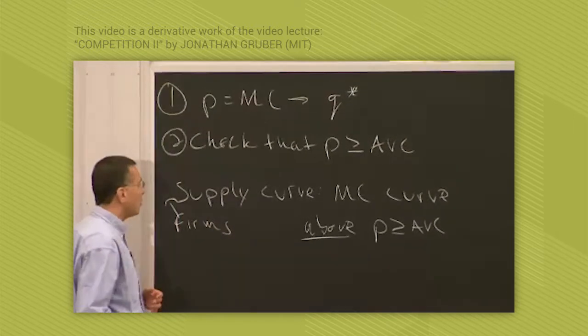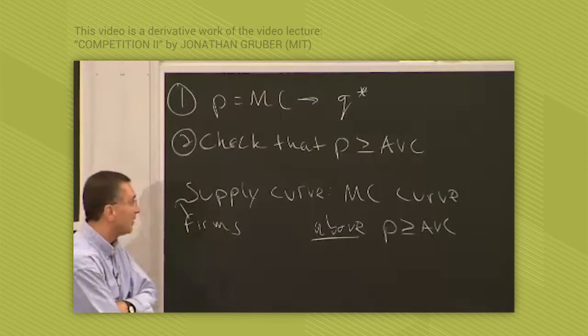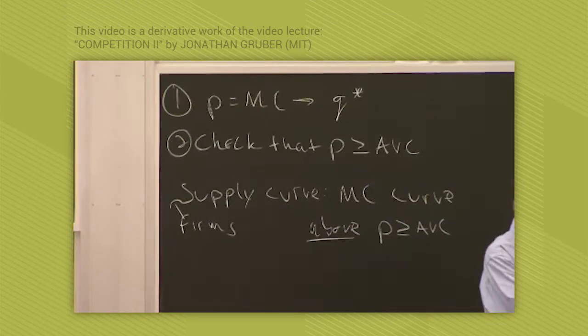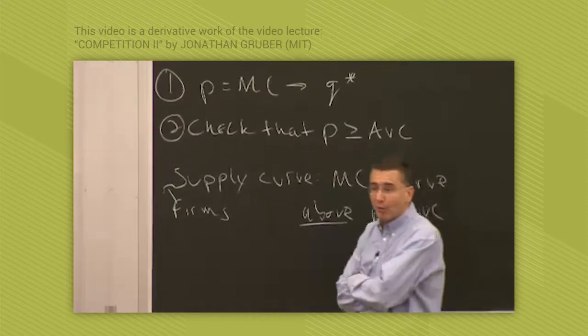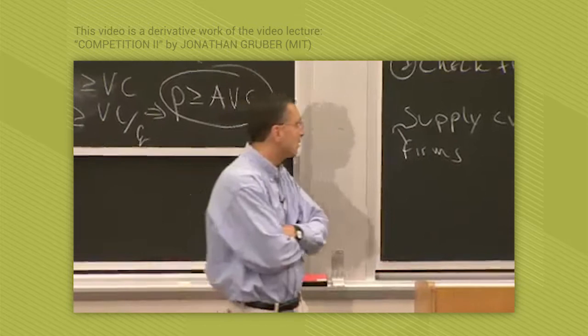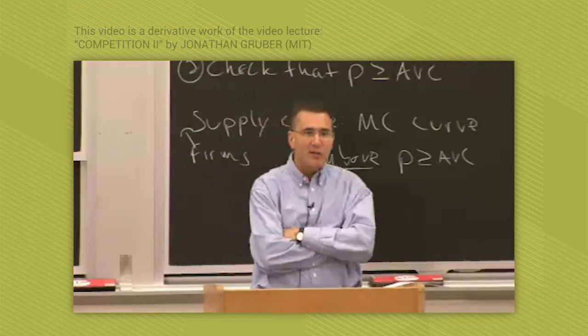This is the firm's supply curve. Now, of course, what we talked about in the first lecture was not firm supply curve, but market supply curves. So now let's take the next step. Where do market supply curves come from? We now know where firm supply curves come from. The marginal cost stork brings them.